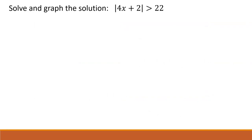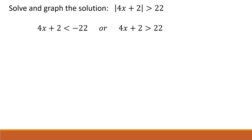Now let's use those foundational ideas to solve and graph the solution to the absolute value of 4x plus 2 is greater than 22. This inequality tells us we're looking for numbers that are more than 22 units from 0 on the number line, and those numbers are being described by 4x plus 2. So we know that 4x plus 2 is either less than negative 22 — to the left of negative 22 — or greater than positive 22, to the right of 22.